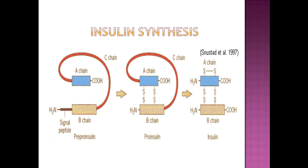Removal of the signal peptide during insertion into the endoplasmic reticulum generates proinsulin, consisting of three domains: the amino acid terminal B chain, carboxyl A chain, and a connecting C peptide in the middle.